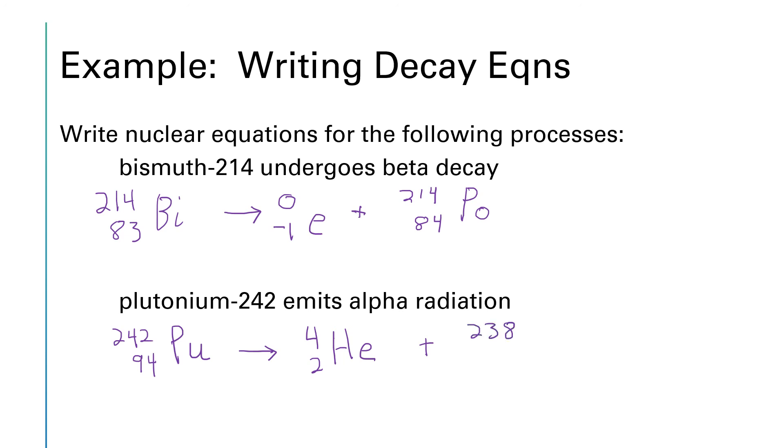So our missing product has a mass number of 238. And then for the atomic number, 94 minus 2 gives us 92. Looking at the periodic table, the element with atomic number 92 is uranium.